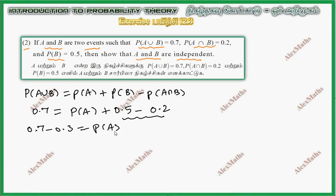So finally, P(A) value is 0.4. So P(A) is there, P(B) is there, P(A intersection B) is there. Now,